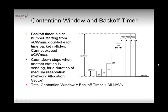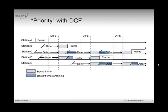At the end you reach zero and you send. But there is no guarantee that you'll be sending before anybody else. For example, stations A, B, C, D and E all have something to send. They wait for the contention window and then station A is the first to send.